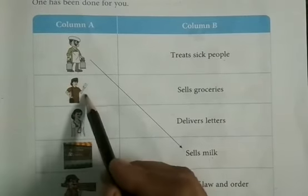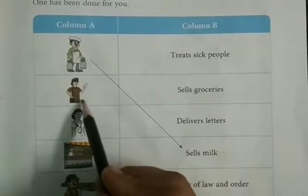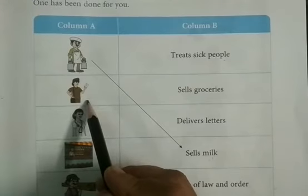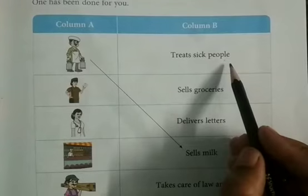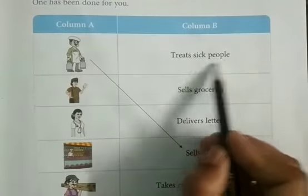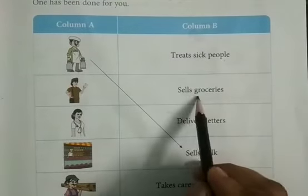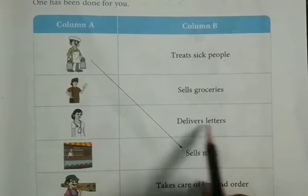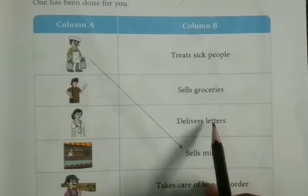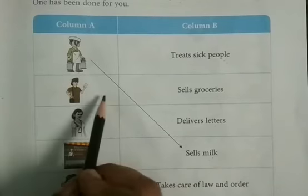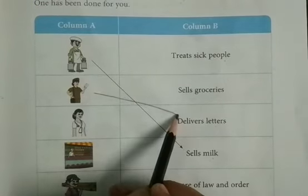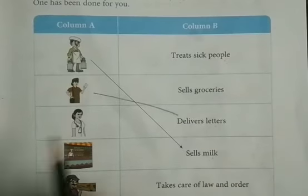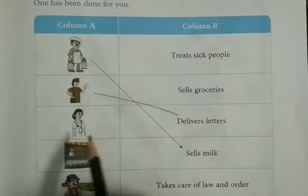Now check the second picture clue. This is postman. Now check the options: treats sick people, sells groceries, delivers letters. Now which is the correct option? Yes. Postman delivers letters. And this is the correct option.